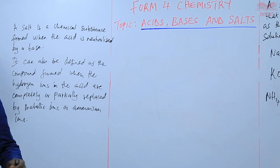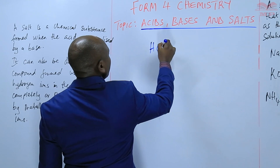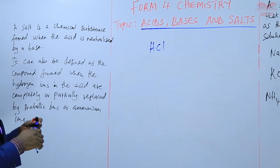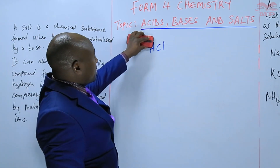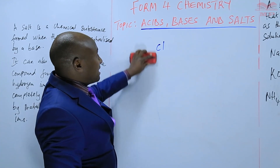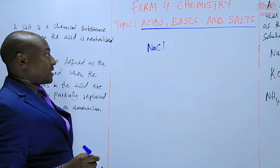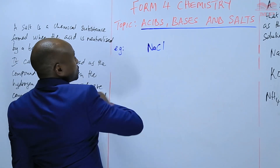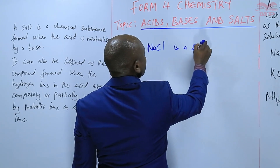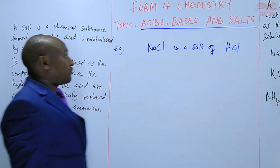To demonstrate: if we have HCl (hydrochloric acid) and we replace the hydrogen ions with a metallic ion such as sodium, we get sodium chloride — which is a salt. So sodium chloride is a salt of hydrochloric acid.